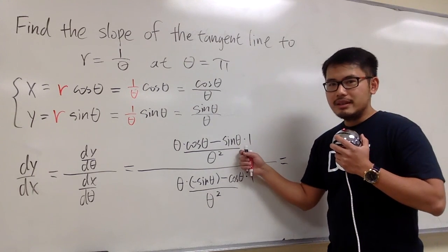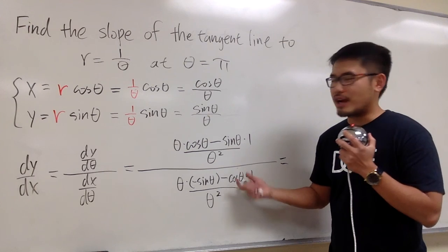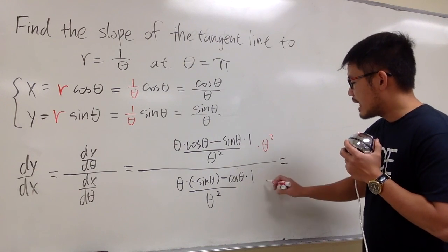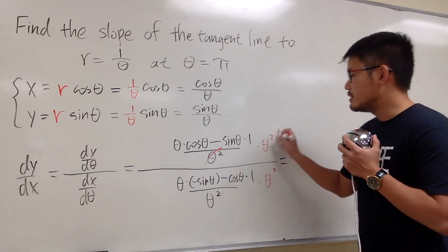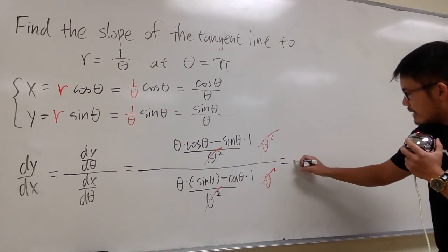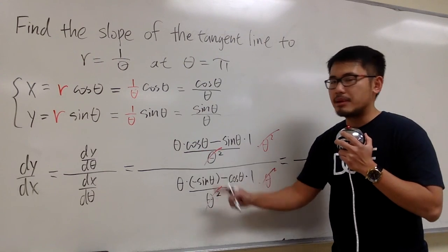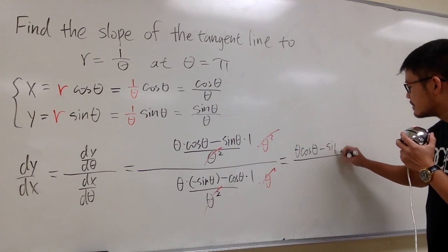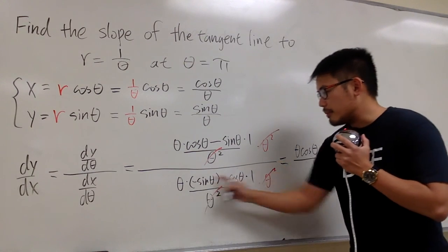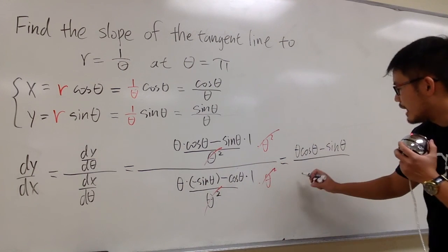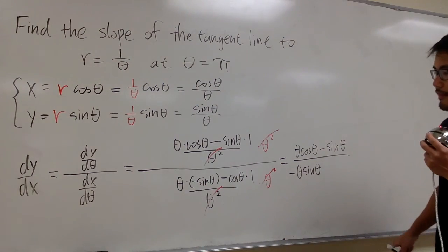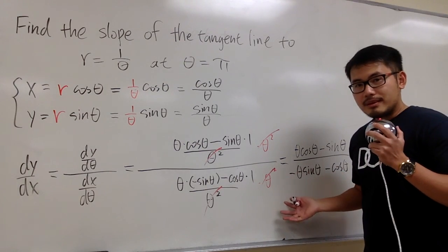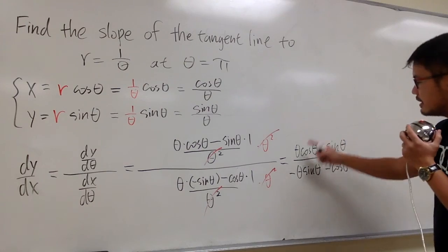This is a complex fraction where both the numerator and denominator are divided by theta squared. We can multiply top and bottom by theta squared so they cancel out nicely. We end up with theta cosine theta minus sine theta on top, and negative theta sine theta minus cosine theta on the bottom. This is the expression for dy/dx in terms of theta.